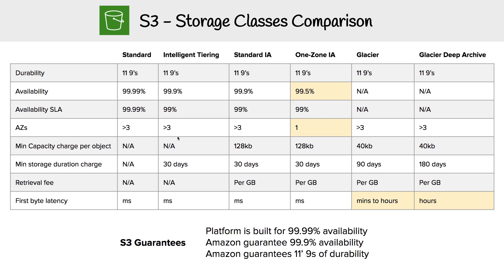You can see that there is a capacity charge for Standard-IA and above. There is a storage duration charge for all the tiers with the exception of Standard. And then you have your retrieval fees, which are only going to come in for IA and Glacier tiers.